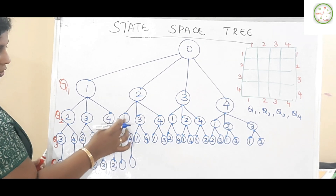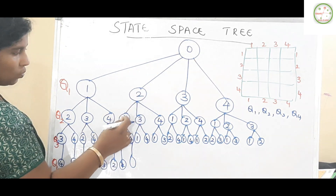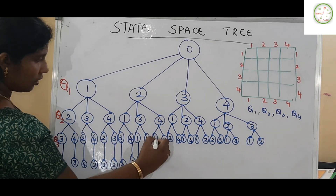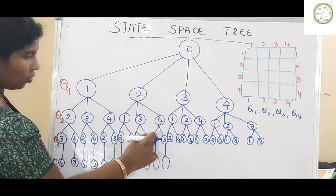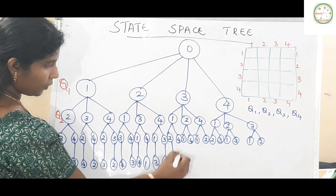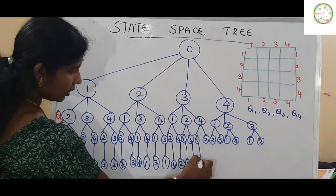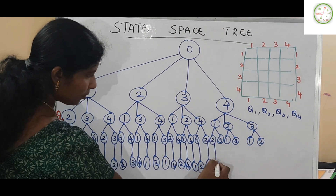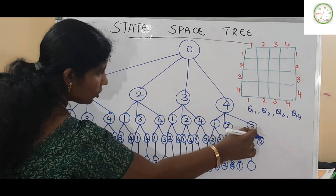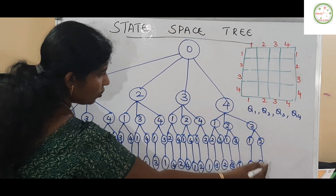Continuing: with positions 1 and 3 filled, position 4 is the only option. With 2, 1, 4 filled, position 3 remains. With 2, 4, 1 filled, position 3. With 2, 4, 3 filled, position 1. With 3, 1, 2 filled, position 4. With 3, 1, 4 filled, position 2. Similarly, all remaining branches are filled out: with 4, 3, 1 filled, position 2 is empty; with 4, 3, 2 filled, position 1 is empty. This completes the entire level for Q4.